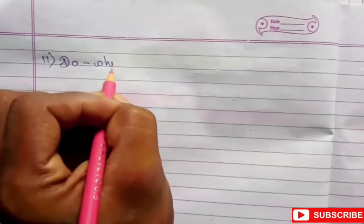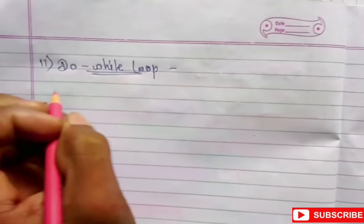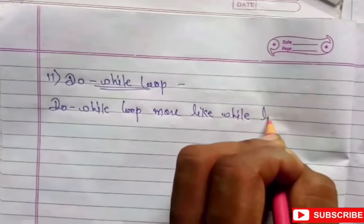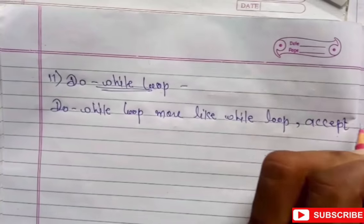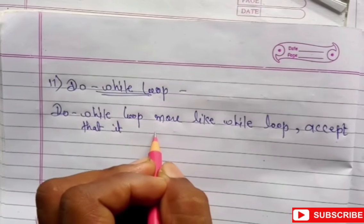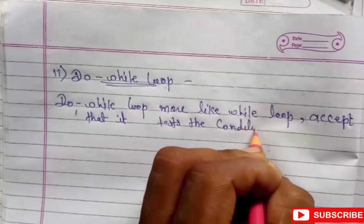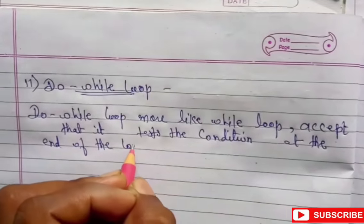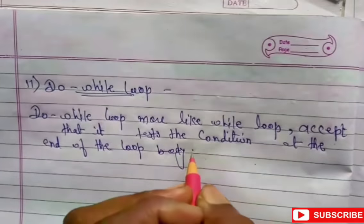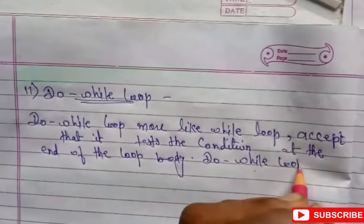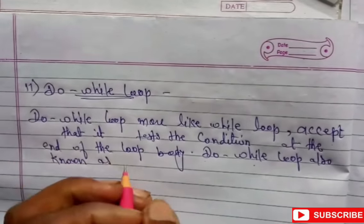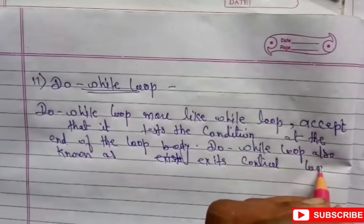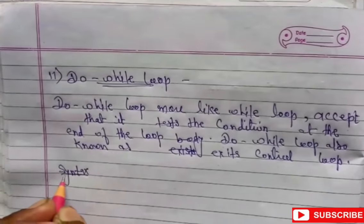Now we discuss the do-while loop — what it is and its syntax. Do-while loop is more like a while loop, except that it tests the condition at the end of the loop body. The while loop checks condition before; the do-while loop checks condition at the end. Do-while loop is also known as an exit control loop, while while loop is an entry control loop.